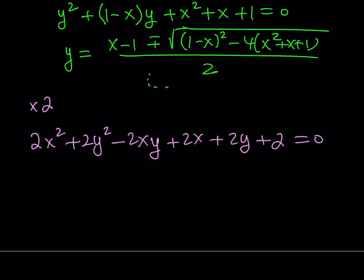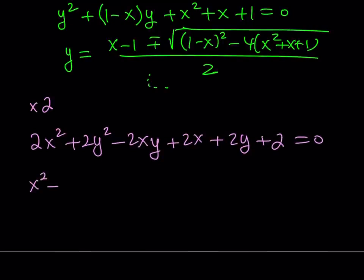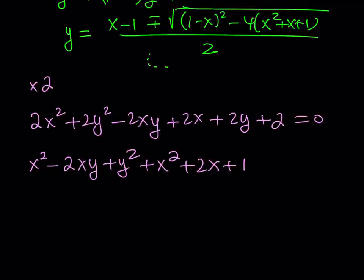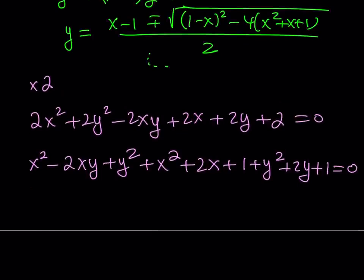I can take x squared, then minus 2xy, then add y squared — and this becomes a perfect square. Then the remaining x squared can be combined with 2x, borrowing 1 from the 2, making another perfect square. Now I have y squared, 2y, and 1 left — because I used everything else. You can add these up to verify we're getting the exact same expression.